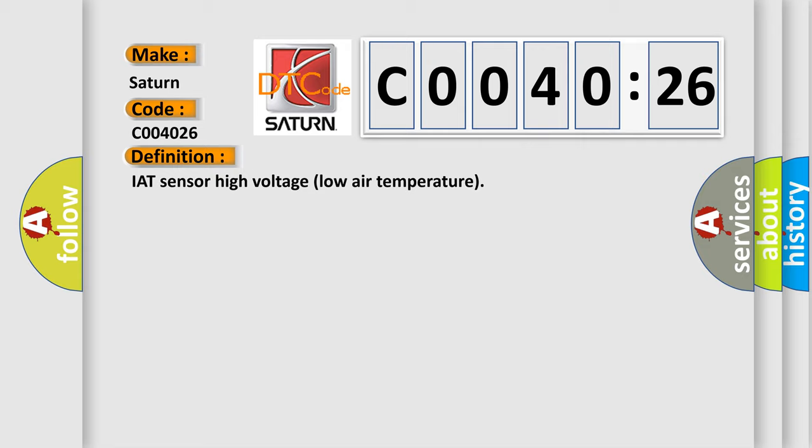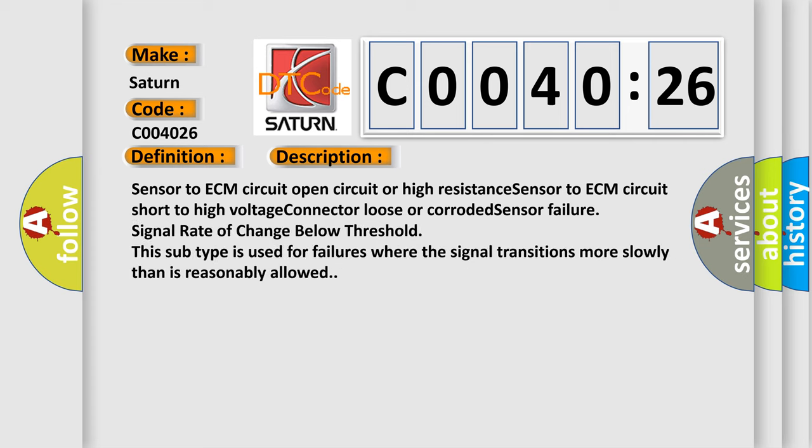And now this is a short description of this DTC code: Sensor to ECM circuit open circuit or high resistance, sensor to ECM circuit short to high voltage, connector loose or corroded, sensor failure, signal rate of change below threshold. This subtype is used for failures where the signal transitions more slowly than is reasonably allowed.